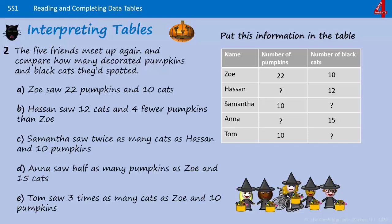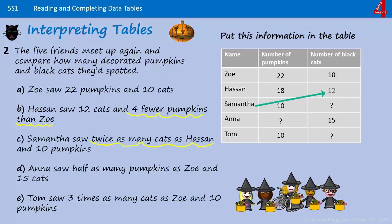Now with the information we have we can work out which values should replace those question marks. The first one: how many pumpkins did Hassan see? It says he saw four fewer pumpkins than Zoe, so we look at how many pumpkins Zoe saw, which was 22, and take four away — Hassan must have seen 18 pumpkins. The next one: Samantha saw twice as many cats as Hassan. Hassan saw 12 cats, so Samantha must have seen 24.